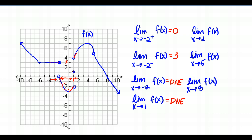Sometimes students want to say the answer is 1 because that's where they see the filled-in circle, but remember limits don't care about where the function is defined. If you wanted to know where the filled-in circle was, that question would be written as f of 1. So f of 1 is 1, but the limit as X approaches 1 does not exist because from the right and left I don't get close to the same value.